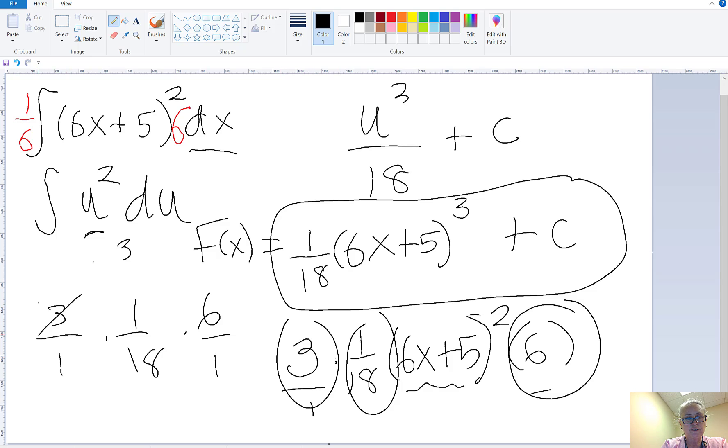So look, 3 goes into 18 six times, 6 goes into 6 one time. I'm left with a bunch of ones. In other words, all this stuff cancels out. Look what I'm left with, (6x + 5) squared.